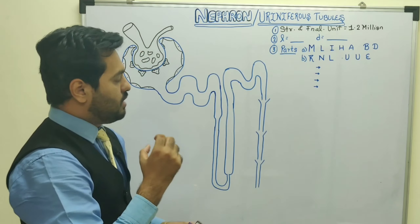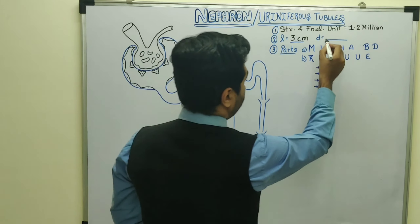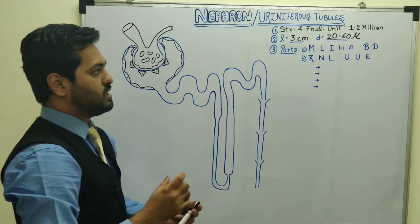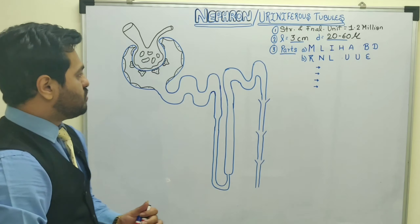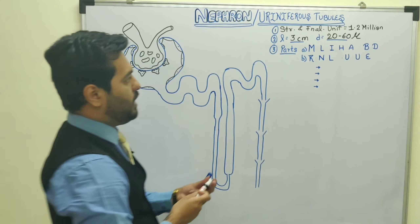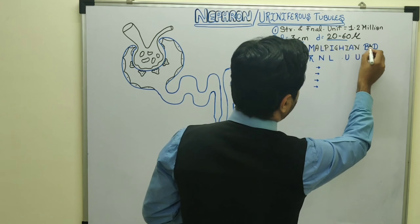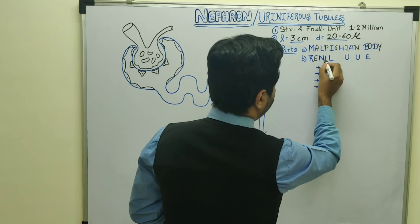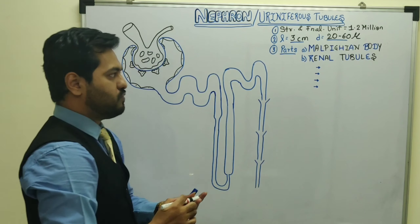The length of the nephron is around 3 cm and the diameter is around 20 to 60 microns. When you observe the structure of the nephron, it mainly consists of two parts: one part is called the Malpighian body, and the second part is known as the renal tubules.